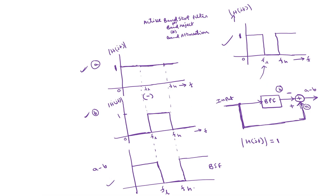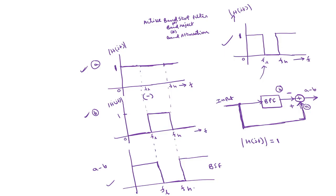To obtain the band stop filter response, you subtract from the input the output of the band pass filter. Practically, the response will have a shape similar to the band pass filter response. The frequency at which the magnitude is 0 is called the notch frequency. Similar to the band pass filter, we have two types of band stop filter: wide band and narrow band.